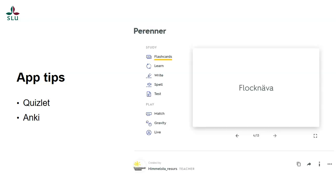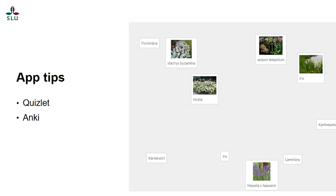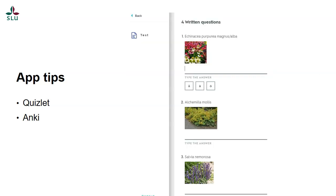Here I show an example of how Quizlet works. In this example I want to learn the scientific name of plants — first I see the Swedish name, and by clicking the card I can see the scientific name. Quizlet also has a feature where you can match cards together. It's also possible to write the answer — for example, writing the Swedish name of the plant. So it can be worth trying these apps.